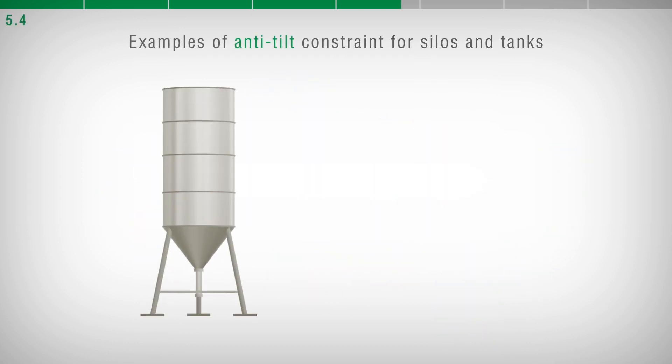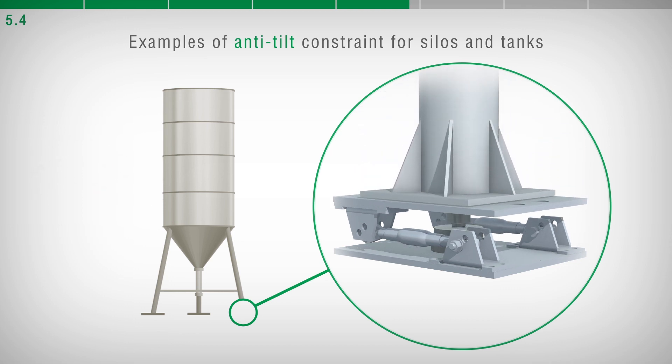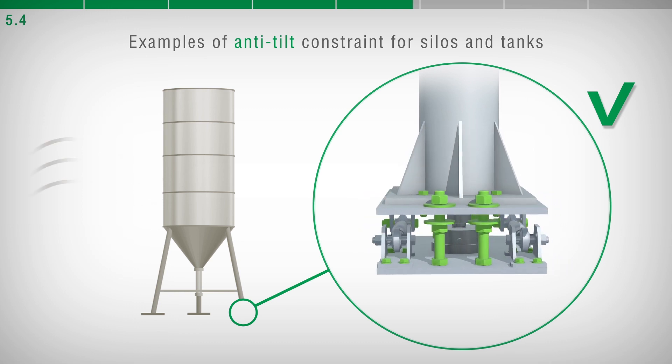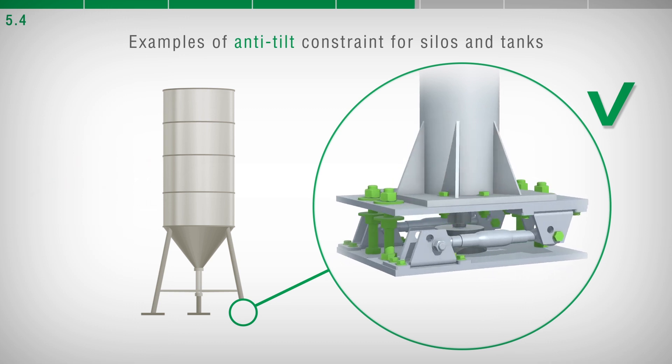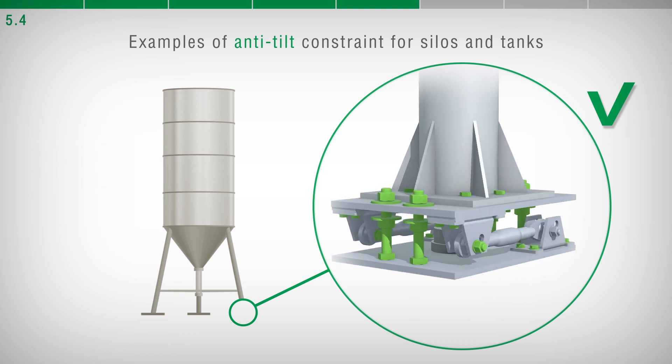The realization of anti-tilt constraint is appropriate in weighing systems such as silos, tanks, or structures placed outdoors and potentially subjected to wind pressure, earthquakes, accidental impacts with operating vehicles such as trucks, forklifts, and other similar situations.